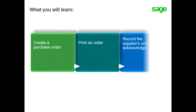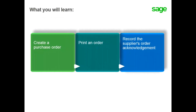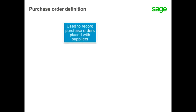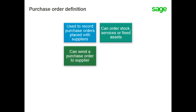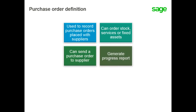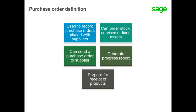In this topic, you will learn how to create and print purchase orders as well as record a Supplier's Order Acknowledgement. The purchase order function is used to record purchase orders placed with suppliers. The process is the same to record purchase orders with managed in-stock products, services, and fixed assets. The creation of a purchase order allows you to send a purchase order to the supplier, generate a stock in-progress report, and prepare for the receipt of stock products or the performance of services.